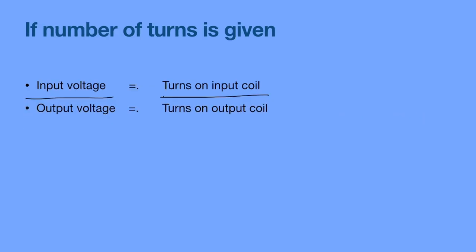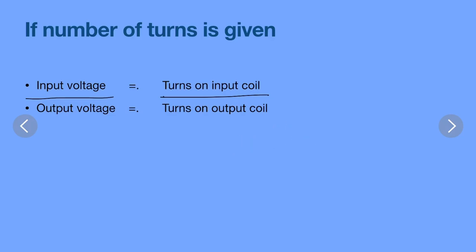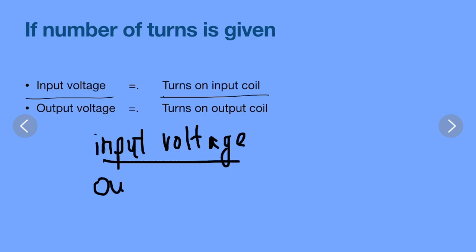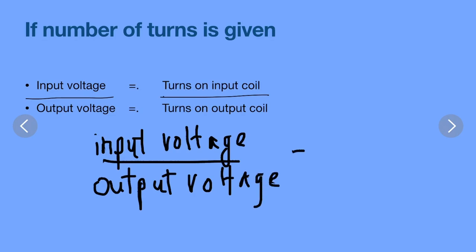There are two equations. First, if the number of turns is given, you can use: input voltage divided by output voltage equals turns on the input coil divided by turns on the output coil. Here, the input voltage is the primary voltage and the output voltage is the secondary voltage, and T represents the number of turns.